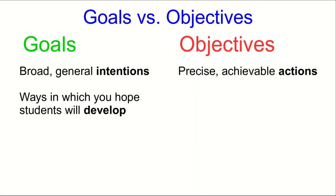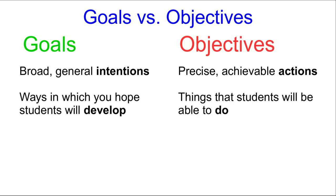Goals are ways that you hope your students will develop or change — they could be things that you want them to learn, or if you're more ambitious, perhaps changes to their behaviors or attitudes. But objectives are things that students will be able to do as a result of the learning.